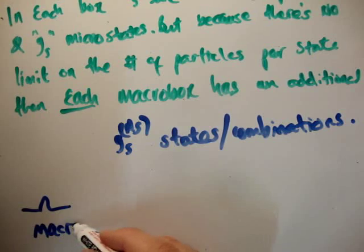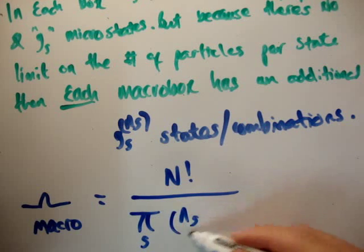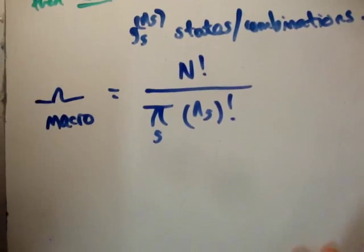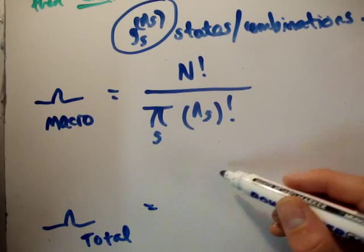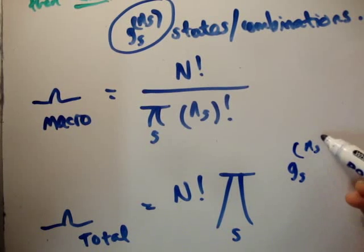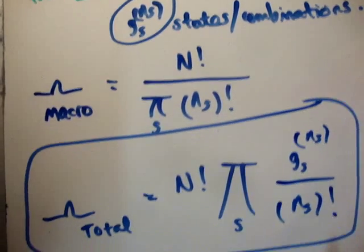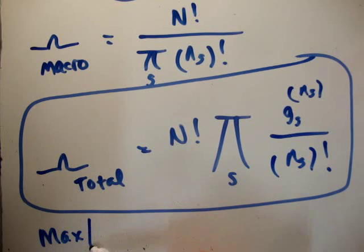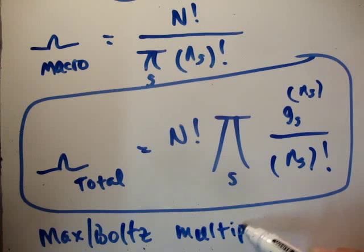In each macro box S, we have N sub S particles and G sub S microstates. But because there's no limit on the number of particles per state, then each macro box has an additional G sub S to the N sub S states. That is multiplicity function rule number 5. So the macro multiplicity is capital N factorial over pi N sub S factorial. But now we have to increase it by this for every one of the macro states. So the total or microscopic description is N factorial times the product over S of G sub S to the power of N sub S divided by N sub S factorial. This is the Maxwell-Boltzmann multiplicity.